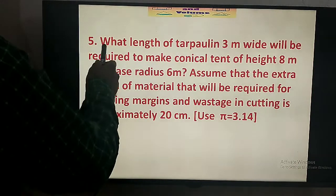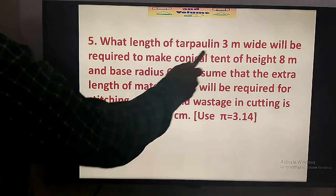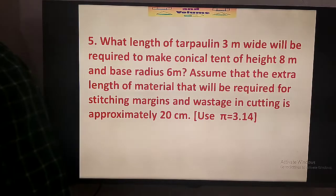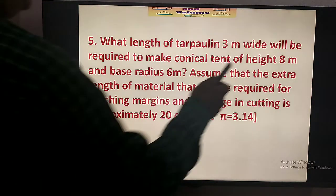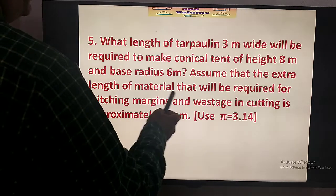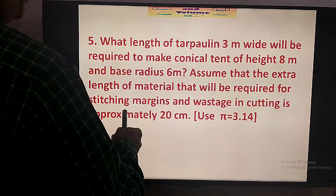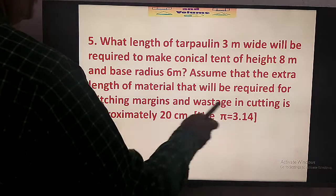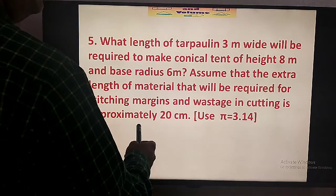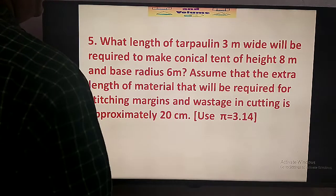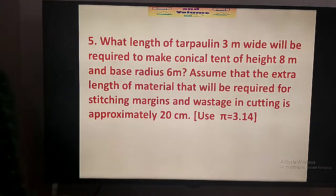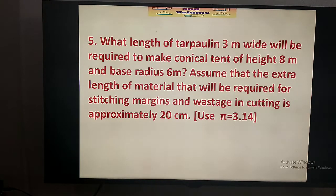Now, what is given in problem number 5: what length of tarpaulin 3 meters wide will be required to make a conical tent with height 8 m and base radius 6 m? Assuming that after cutting and stitching, 20 cm will get wasted — that is 20 divided by 100, which is 0.2 meter.